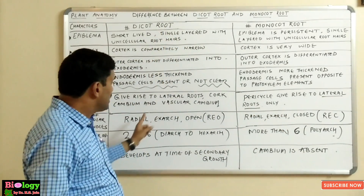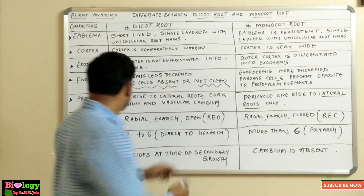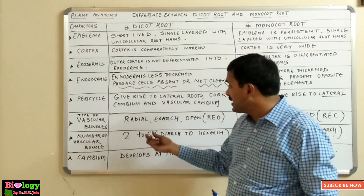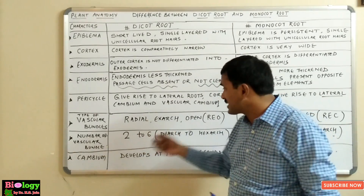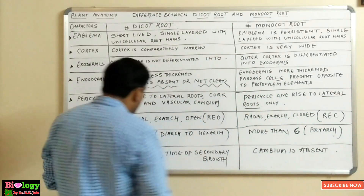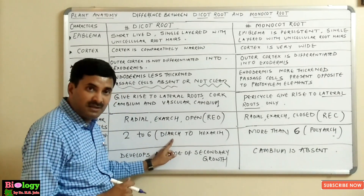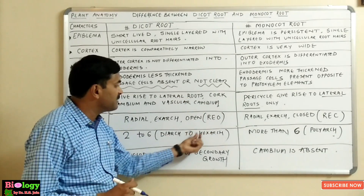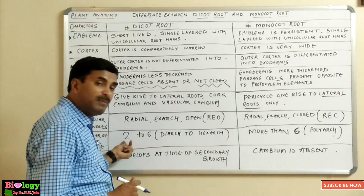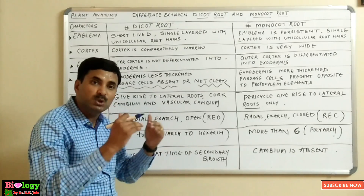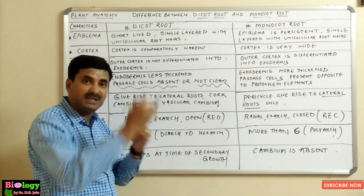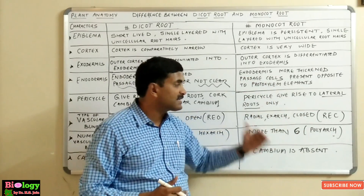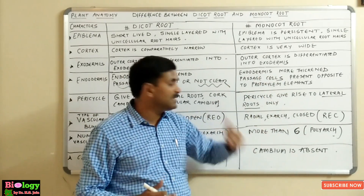Regarding the number of vascular bundles: in the dicot root, the number ranges from a minimum of 2 to a maximum of 6 — diarch, triarch, tetrarch, pentarch, or hexarch. In the monocot root, the vascular bundles are always more than 6, and this condition is called polyarch.